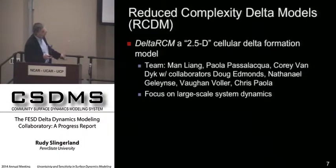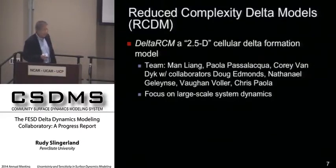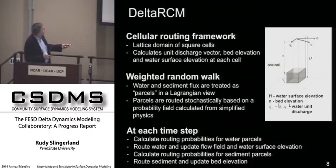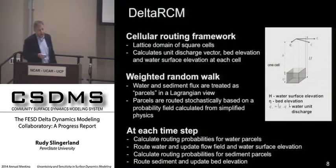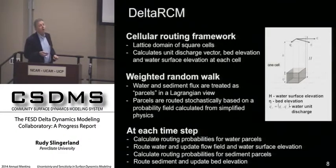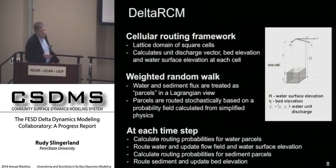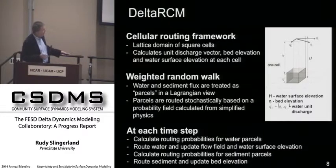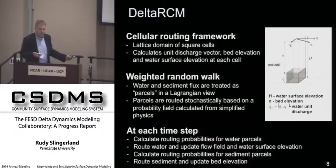There's a domain of square cells in which the discharge vector, bed elevation, water surface elevation, and sediment transport rates are calculated — a fairly standard formulation. What's a little different about this model is the way water and sediment fluxes are calculated. They're thinking of water and sediment as parcels in a Lagrangian point of view, routed stochastically according to simplified physical laws. At each time step, there's calculation of routing probabilities for the water, then update of the water flow field and surface elevation, then routing probabilities for sediment, update of the bed, which feeds back into routing of the water.